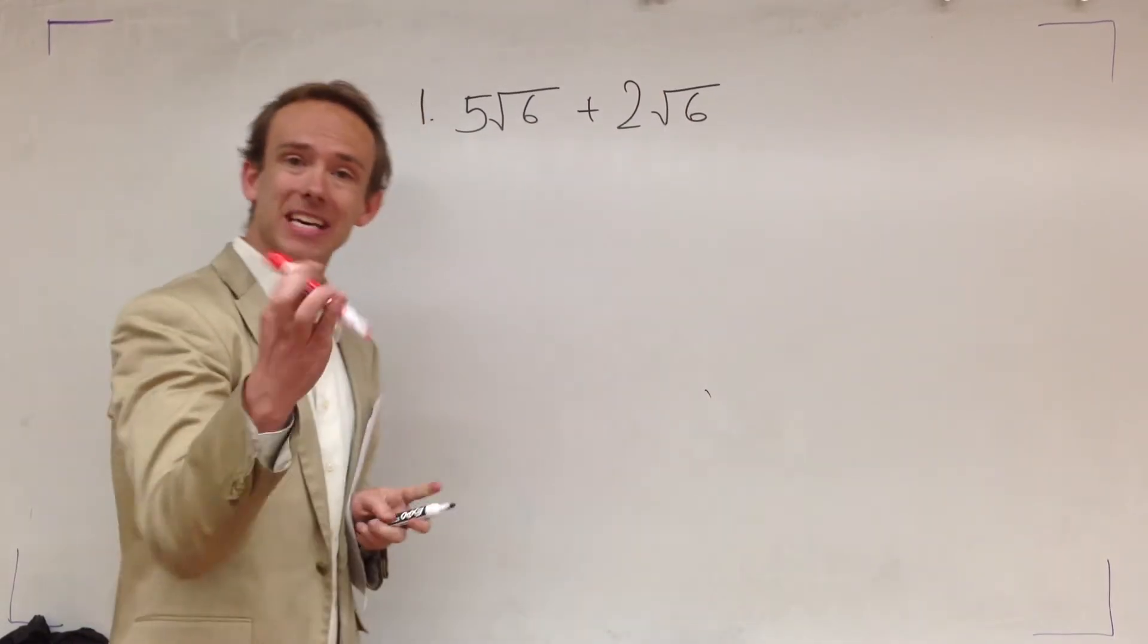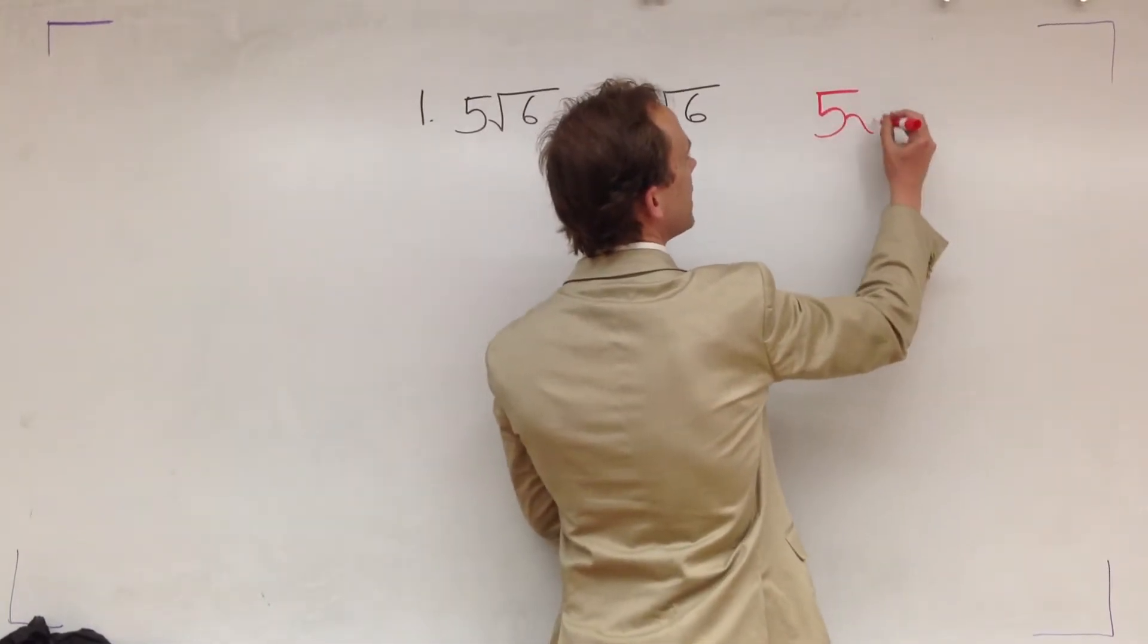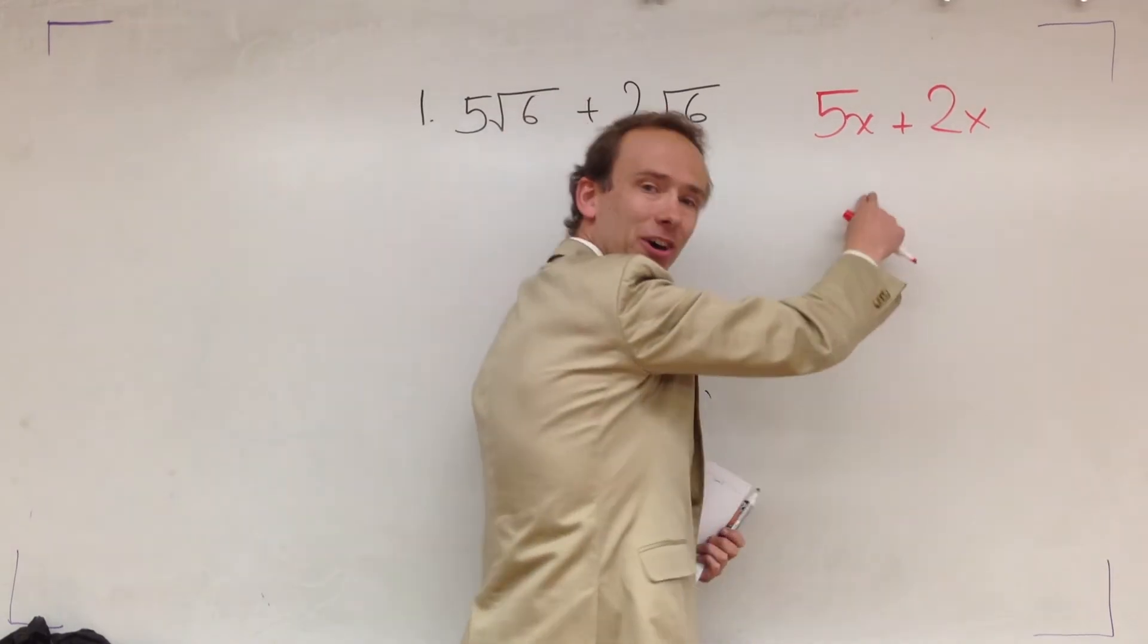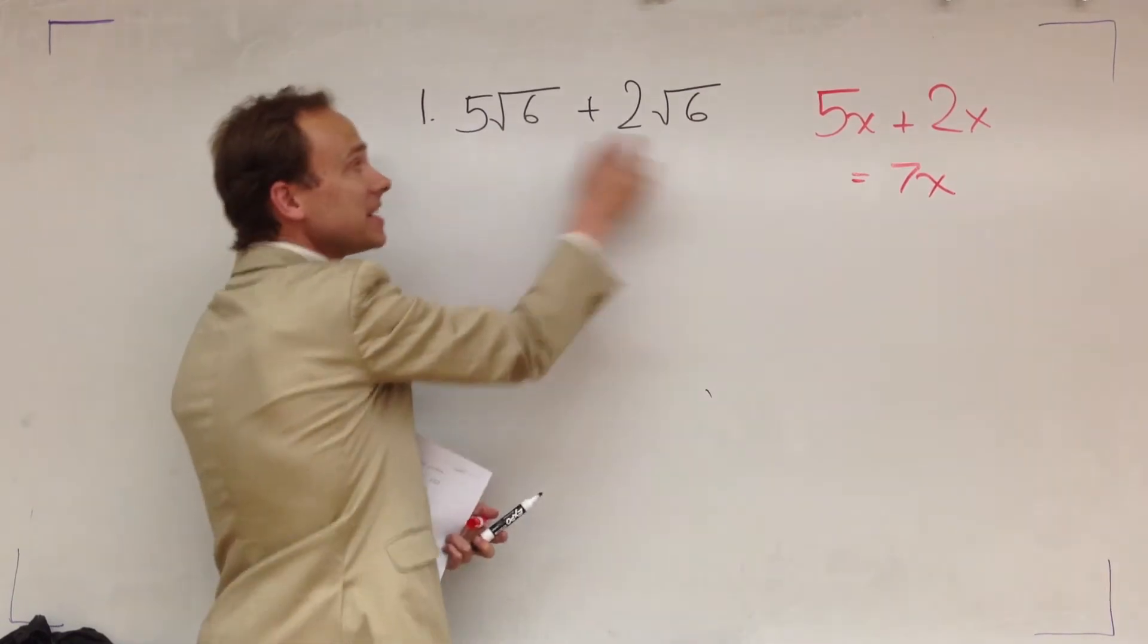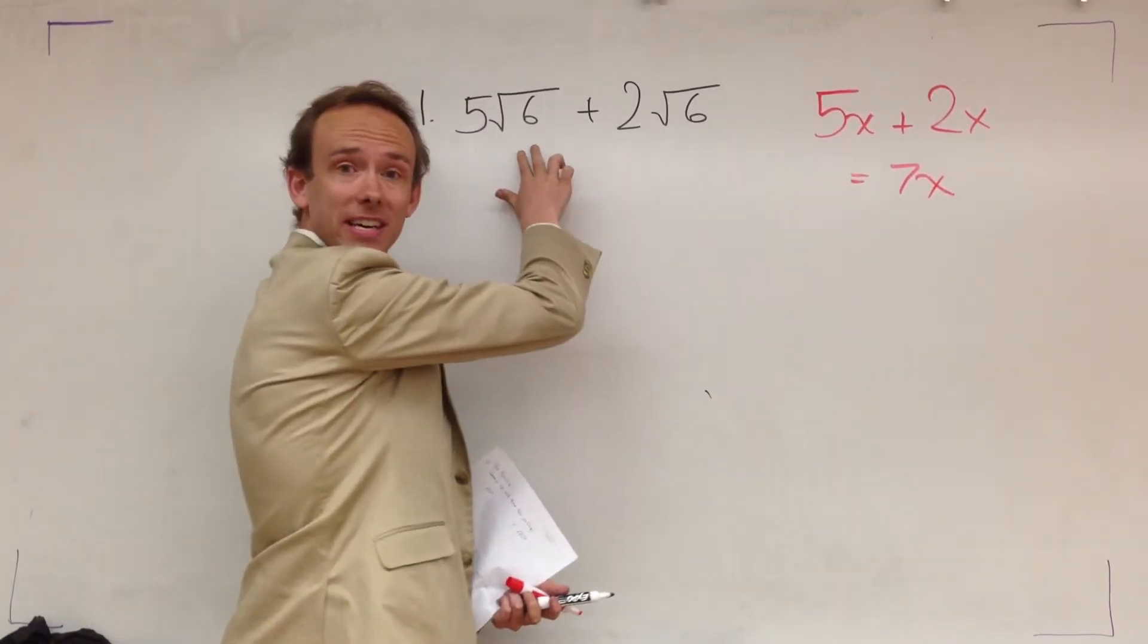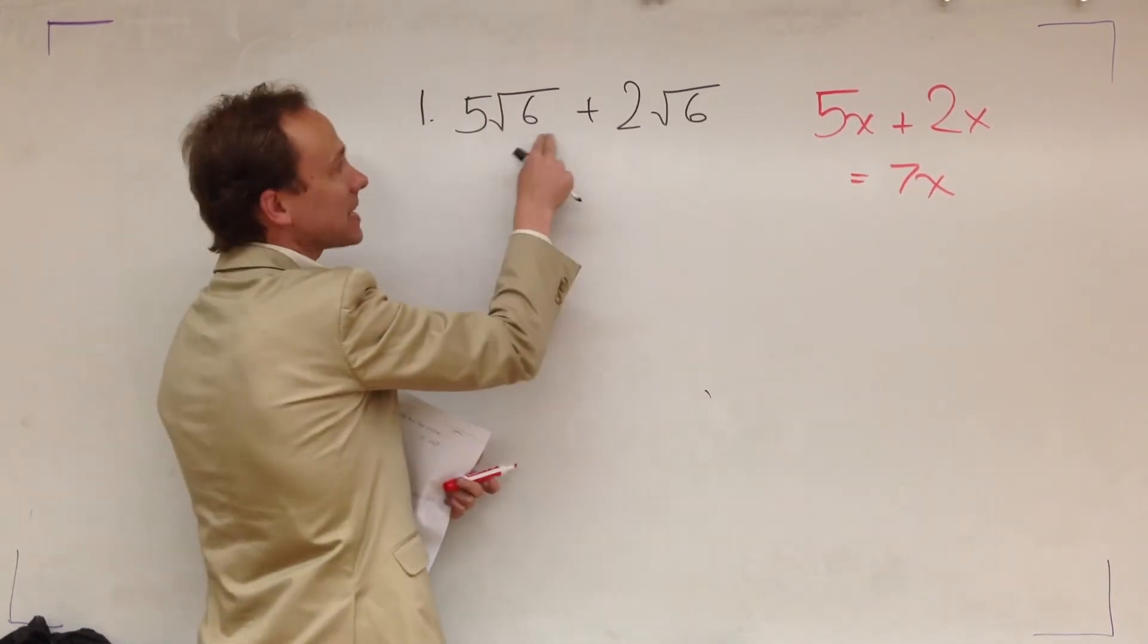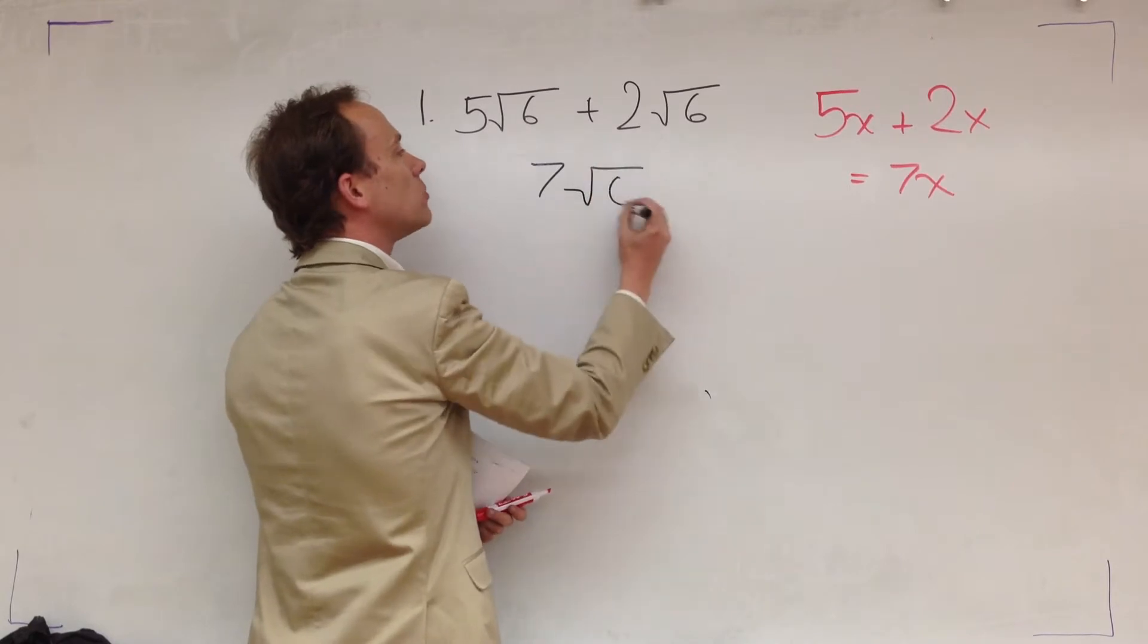So when we're adding radicals, it's pretty much the same as when we were adding variables. Watch. I have 5x plus 2x. And in a very similar way, these are like terms. So when you add them, you get 7x. These are also like terms. Radical 6 and radical 6 is like the x in the x. So when you add them, what happens is you take the number in front of the radical, 5 plus 2. It's 7 root 6.